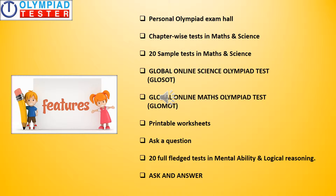The Global Online Science Olympiad Test is a monthly online test conducted globally across 7 countries, also popularly known as GlowSort. Similarly, the Global Online Maths Olympiad Test, known as GlowMot, follows the same format as GlowSort but is for Maths.